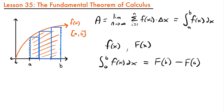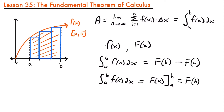Typically when we use this theorem, we have some nice notation: this integral from a to b of the function times dx is going to be equal to the antiderivative of that function evaluated from a to b, which is still equal to the antiderivative evaluated at b minus the antiderivative evaluated at a. These two equations say the same thing, except one includes a middle step that provides useful notation.